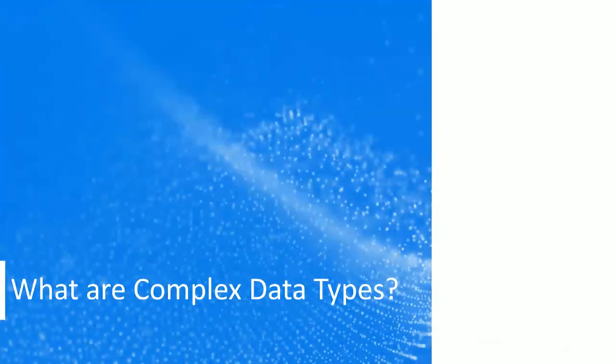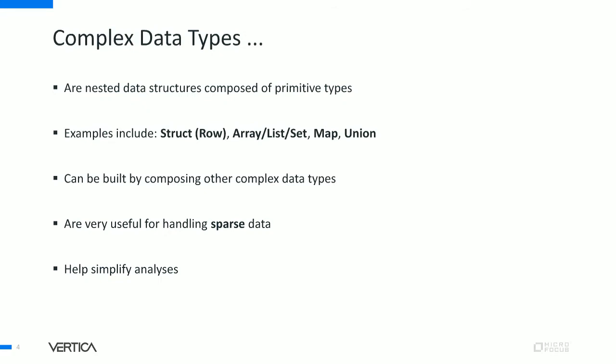So what are complex data types? Complex data types are nested data structures composed of primitive types. Primitive types are your int, float, string, varchar, binary, etc. — the basic types. Some examples of complex data types include struct (also called row), array, list, set, map, and union. Complex data types can also be built by composing other complex data types.